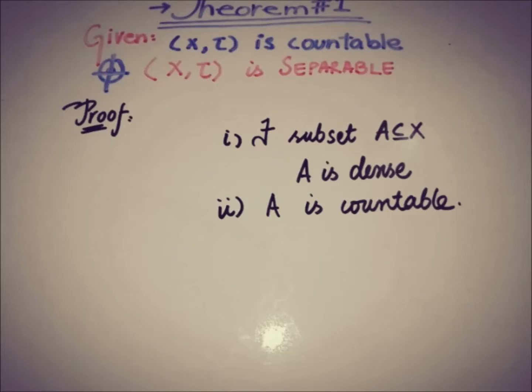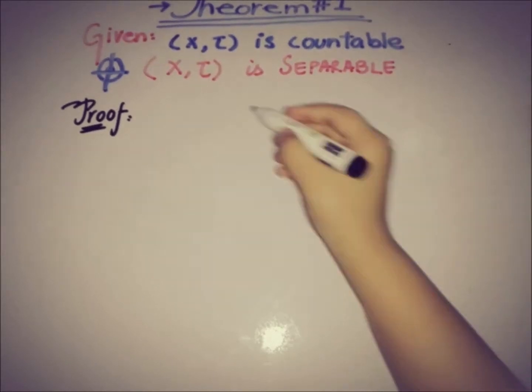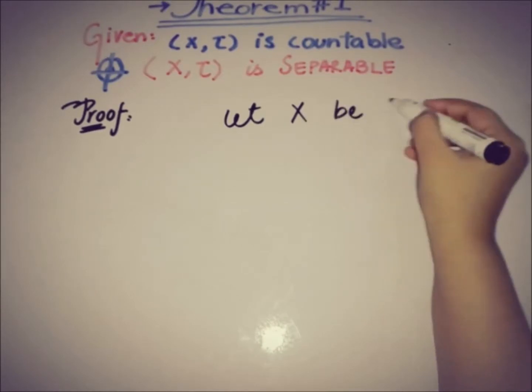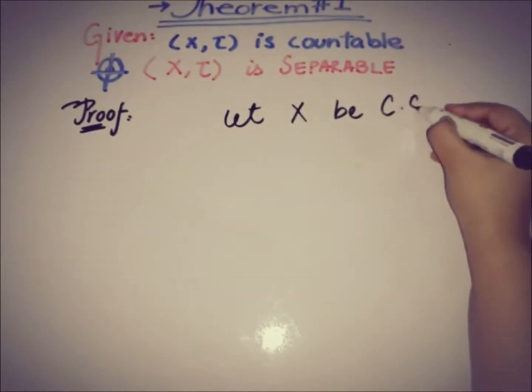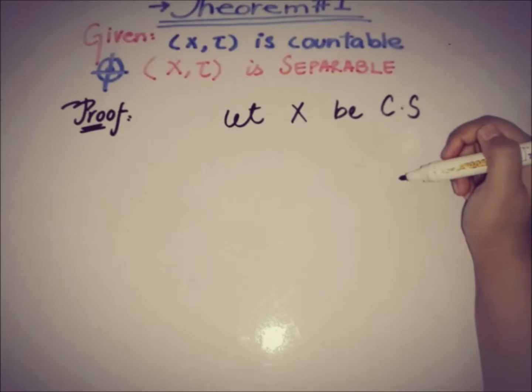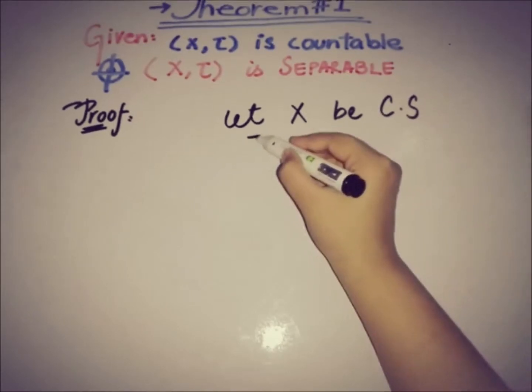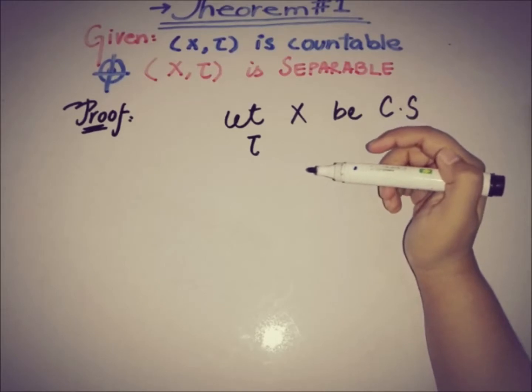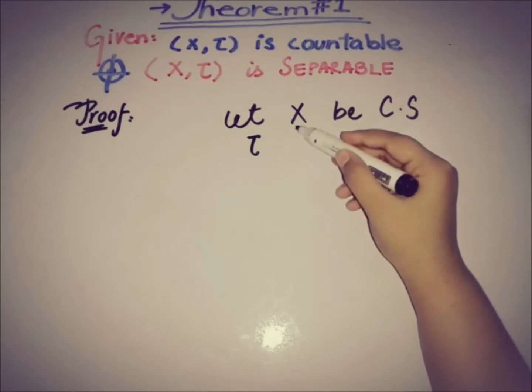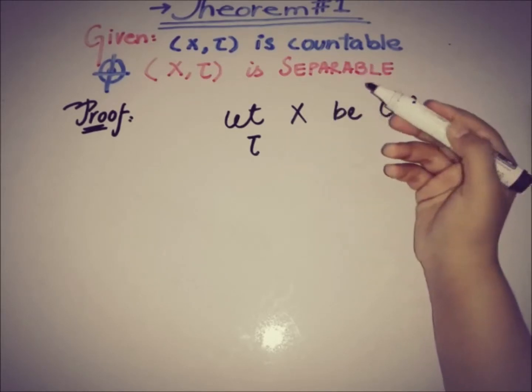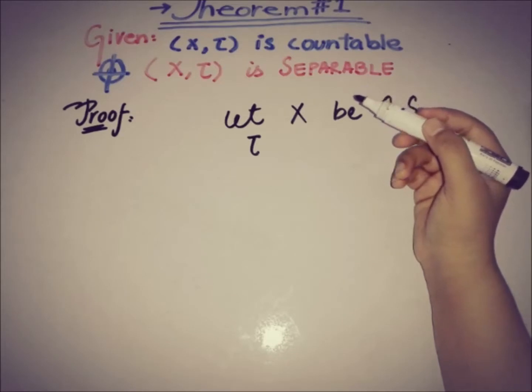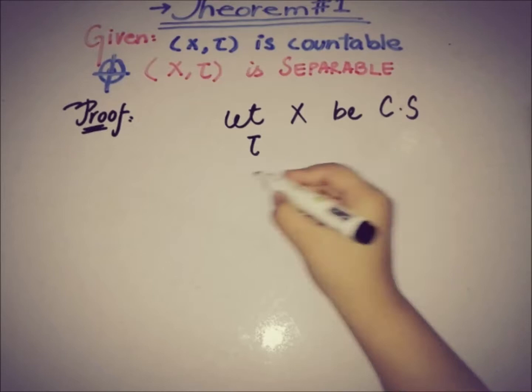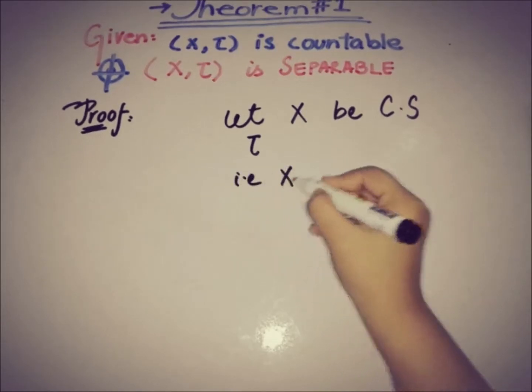Starting this, let X be a countable set, represented by CS, and let τ be any topology on that X. By definition τ must contain X as a member of τ, or we can also say that X is an open set as X is a member of that topology.